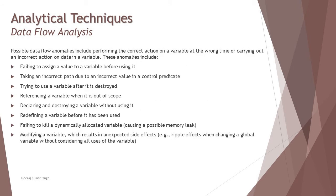Further to add to this, possible data flow anomalies include performing the correct actions on a variable at the wrong time or carrying out an incorrect action on a variable. There are certain anomalies which you should understand. If not done accordingly or not followed with the life cycle of a variable, these can result in issues and effects.